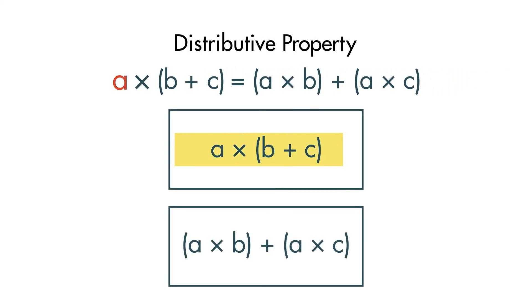To solve A times B plus C, the order of operations says the first step is to add the numbers in parentheses and then multiply by A.